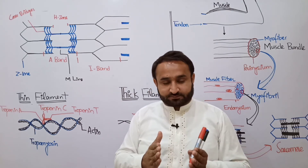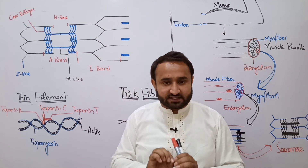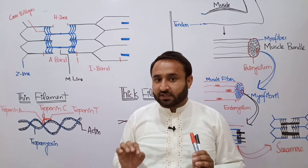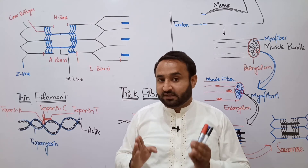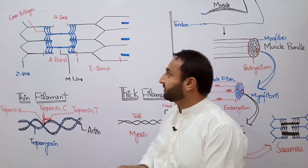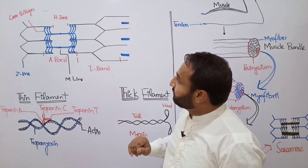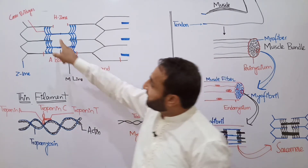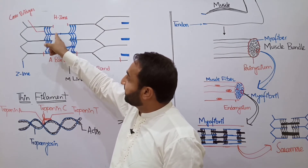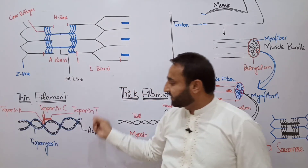The sarcomere is the smallest contractile unit of the myofibril. The sarcomere is the distance or the area between two consecutive Z lines. The cross bridges (or heads) and the tails of myosin are visible in this arrangement.